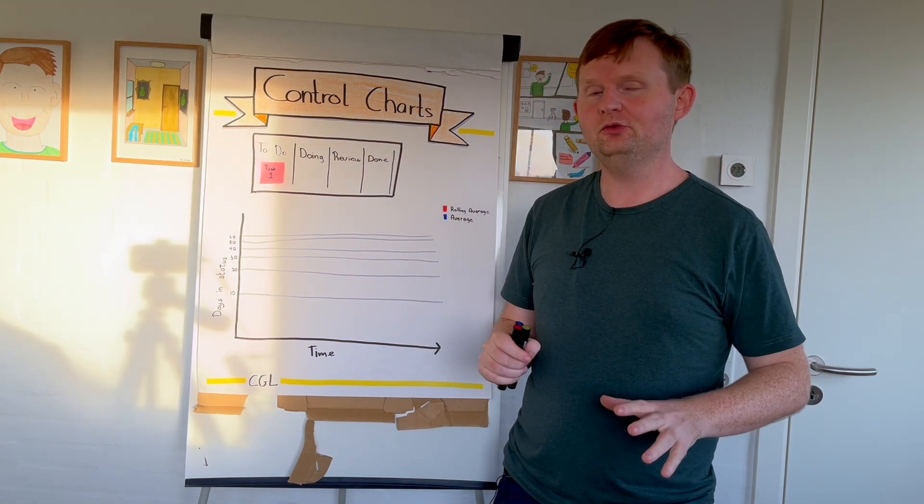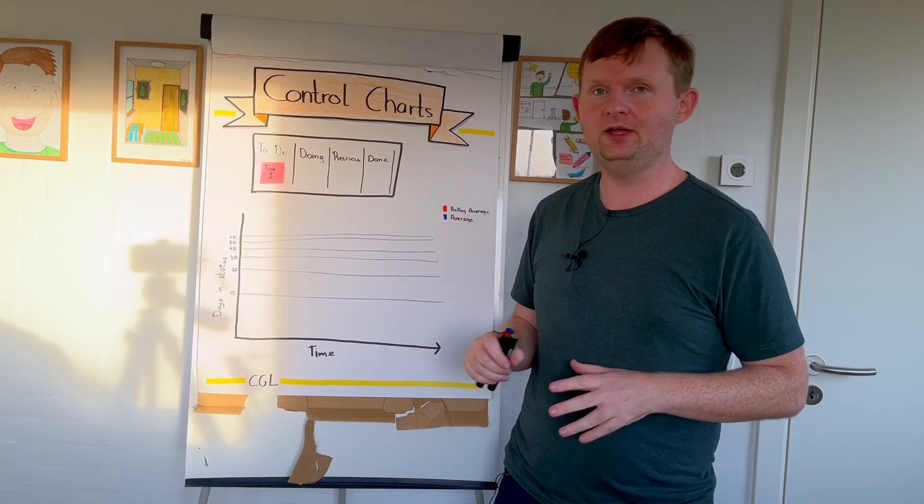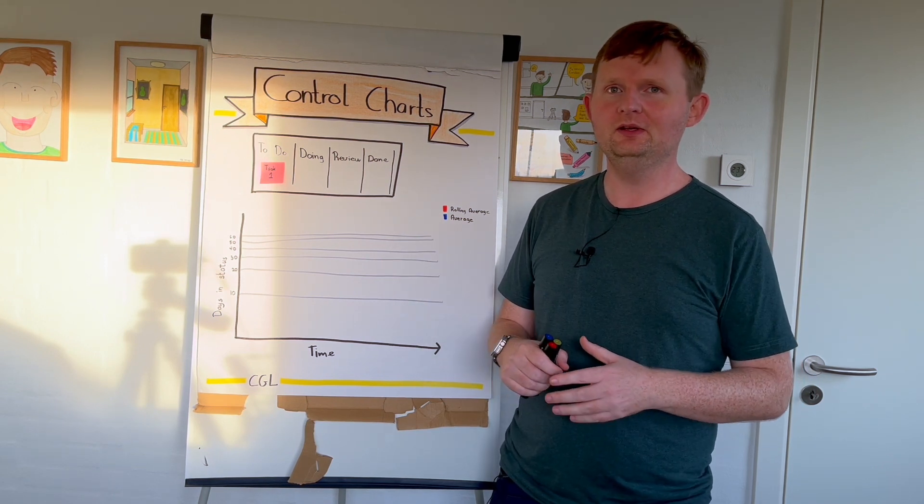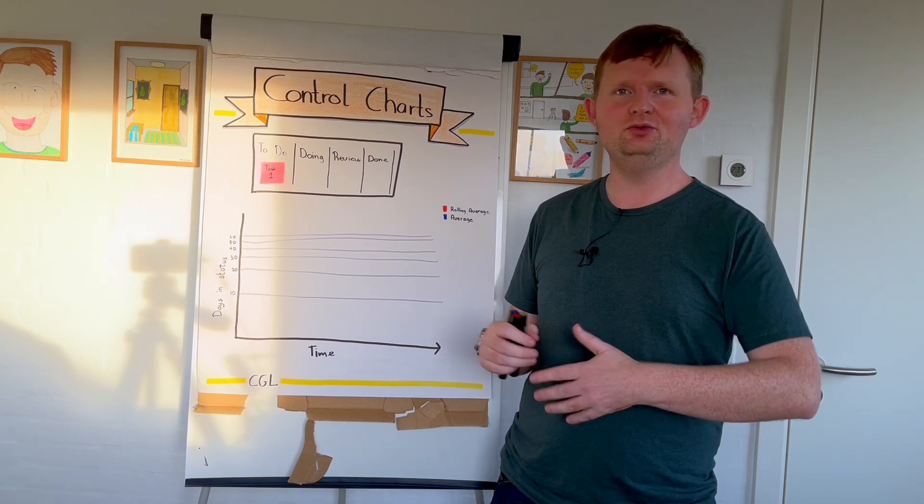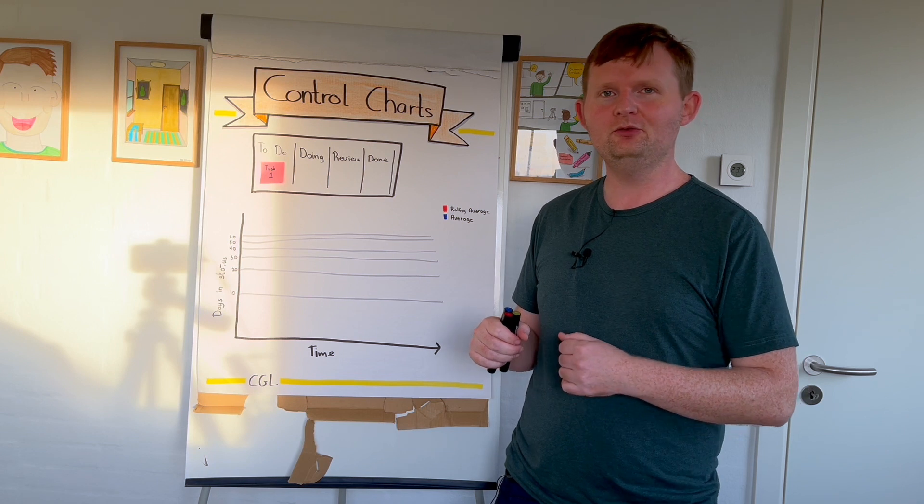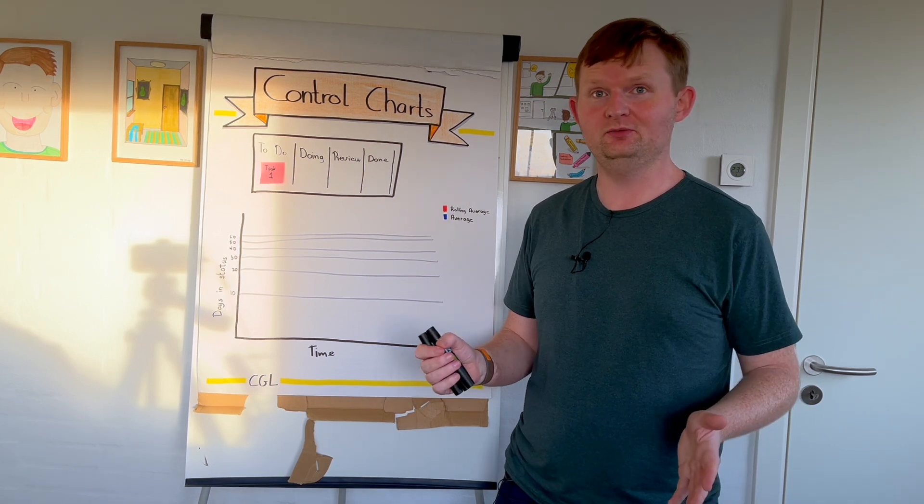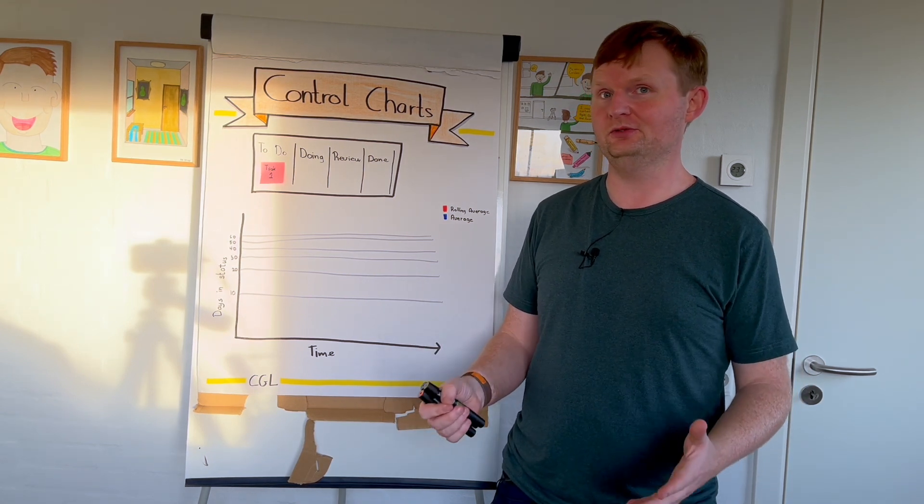You can find control charts in, for instance, Jira and also other tools. It's just yet another way of visualizing how we're doing, but it's not tied to just Scrum. It's also applicable in other ways of working, and you can also make your own control chart.